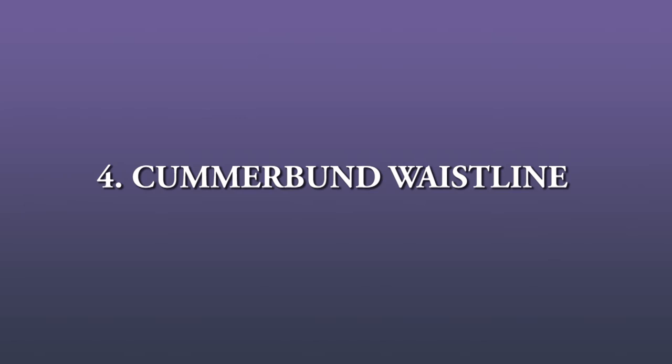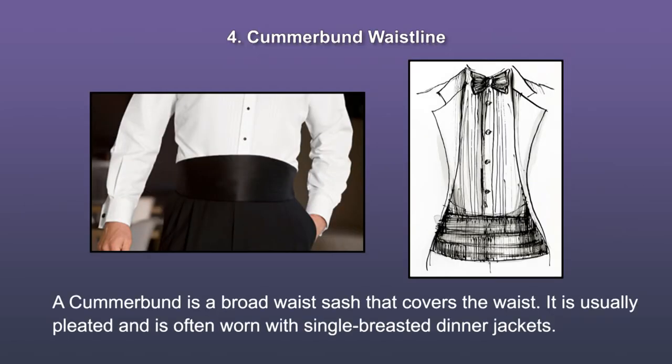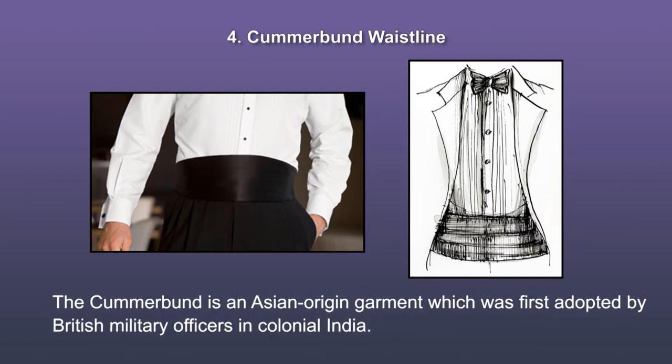Now let us discuss some variations of the basic waistline. The cummerbund waistline. A cummerbund is a broad waist sash that covers the waist. It is usually pleated, which is often worn with single-breasted dinner jackets, mainly with menswear. The cummerbund is an Asian origin garment which was first adopted by British military officers in colonial India. You can see an example here.